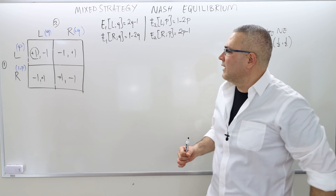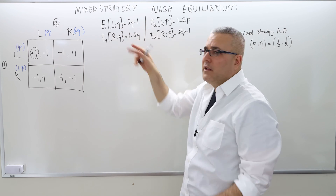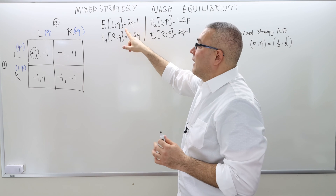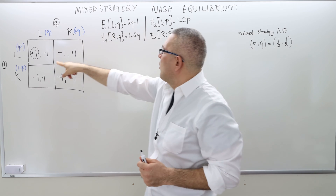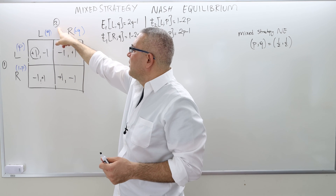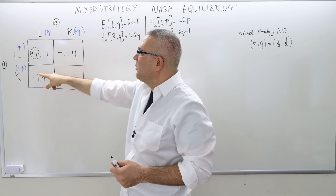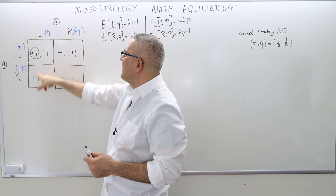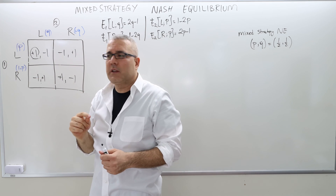I continue with the matching pennies example from the previous video. Please watch the previous video first to understand how we get those expected payoffs. This is the expected payoff of player one if he chooses left, given that player two is playing left with probability Q. And this is the expected payoff of player one if he chooses right. These are the expected payoffs of player two if he chooses left or right, given that player one is playing left with probability P.